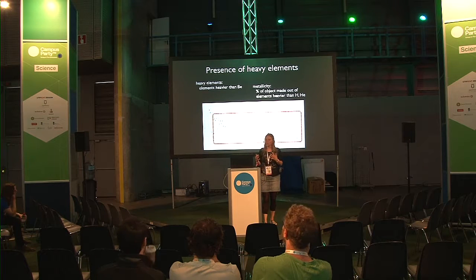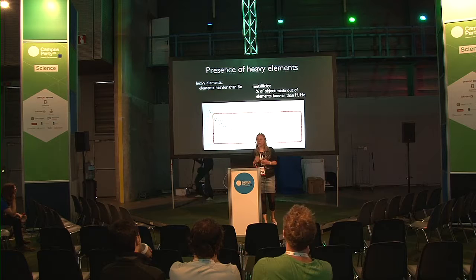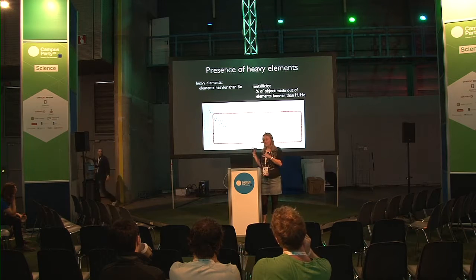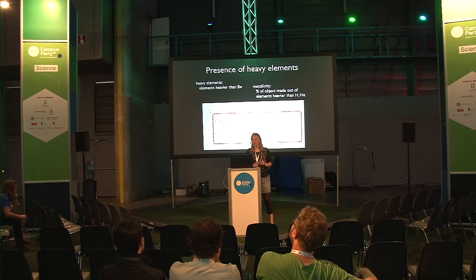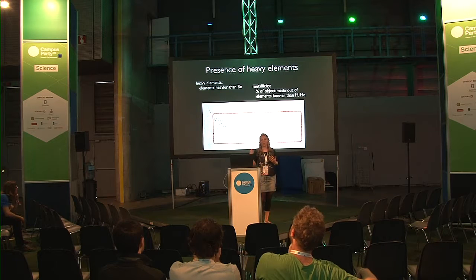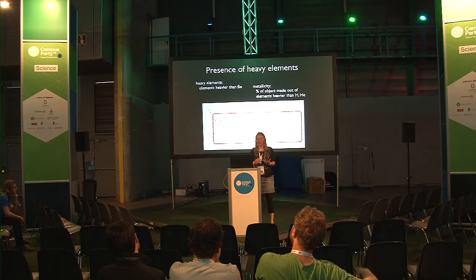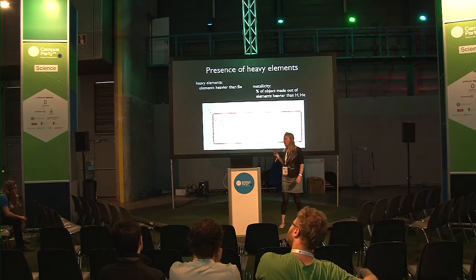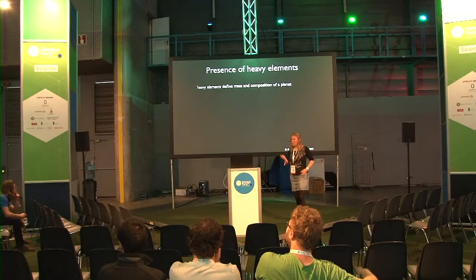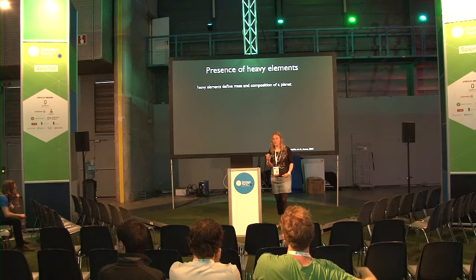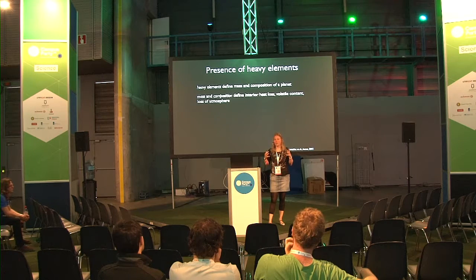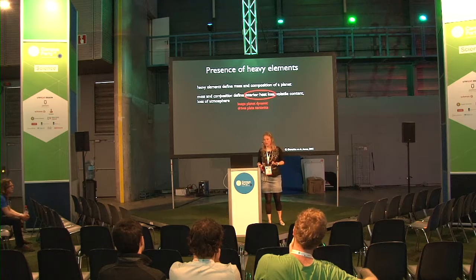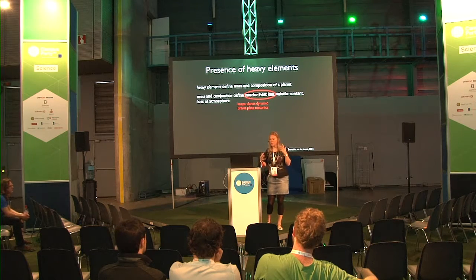Another term used in this context is metallicity. Depending on who you talk to, metallicity is the percentage of an object that is made out of elements heavier than hydrogen and helium — so even lighter than beryllium. Everything other than hydrogen and helium is metallic in this context. These two are interesting because the heavy elements define the mass and the composition of a planet, and the mass and composition define the interior heat loss, the volatile content, and the loss of an atmosphere.